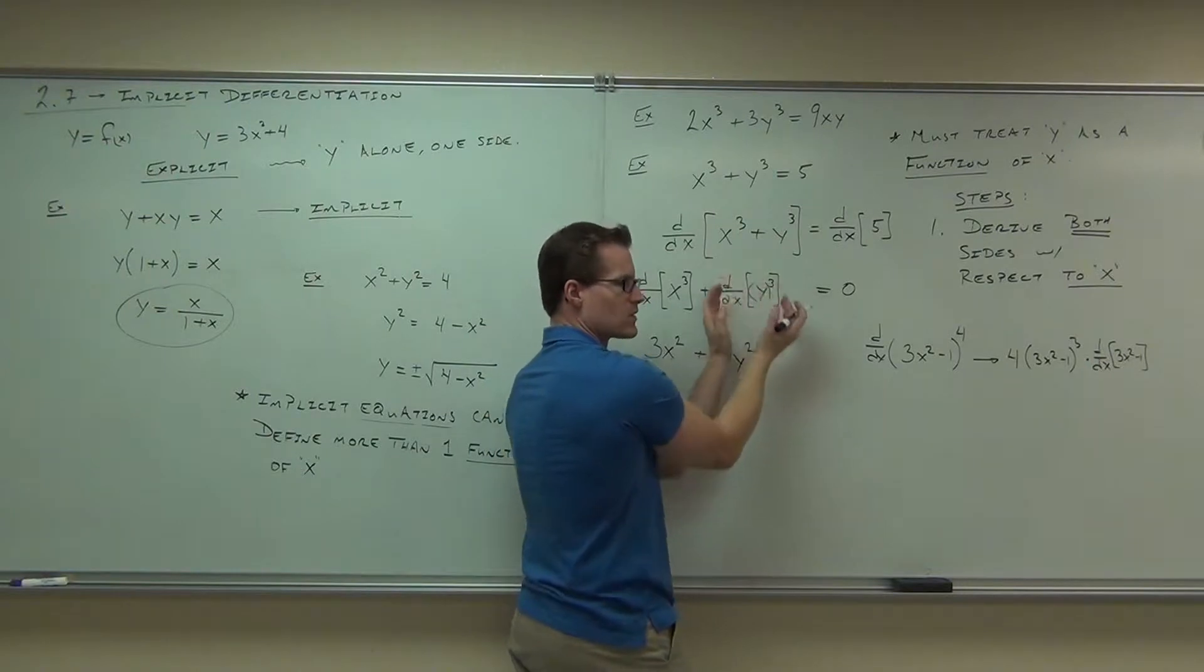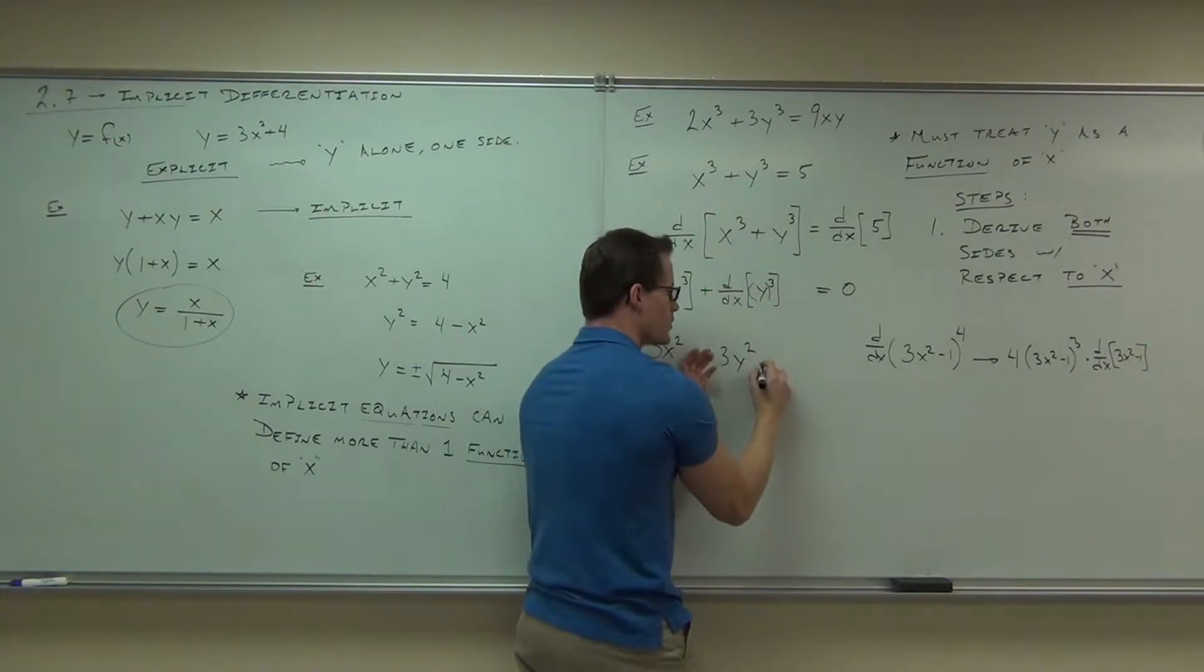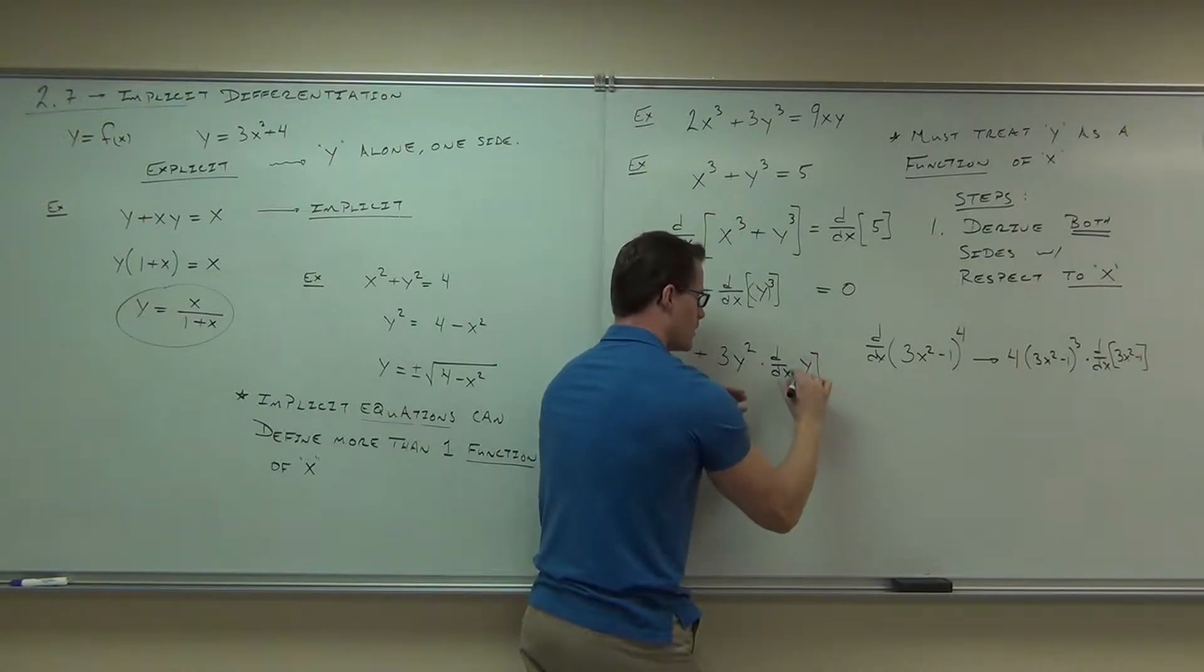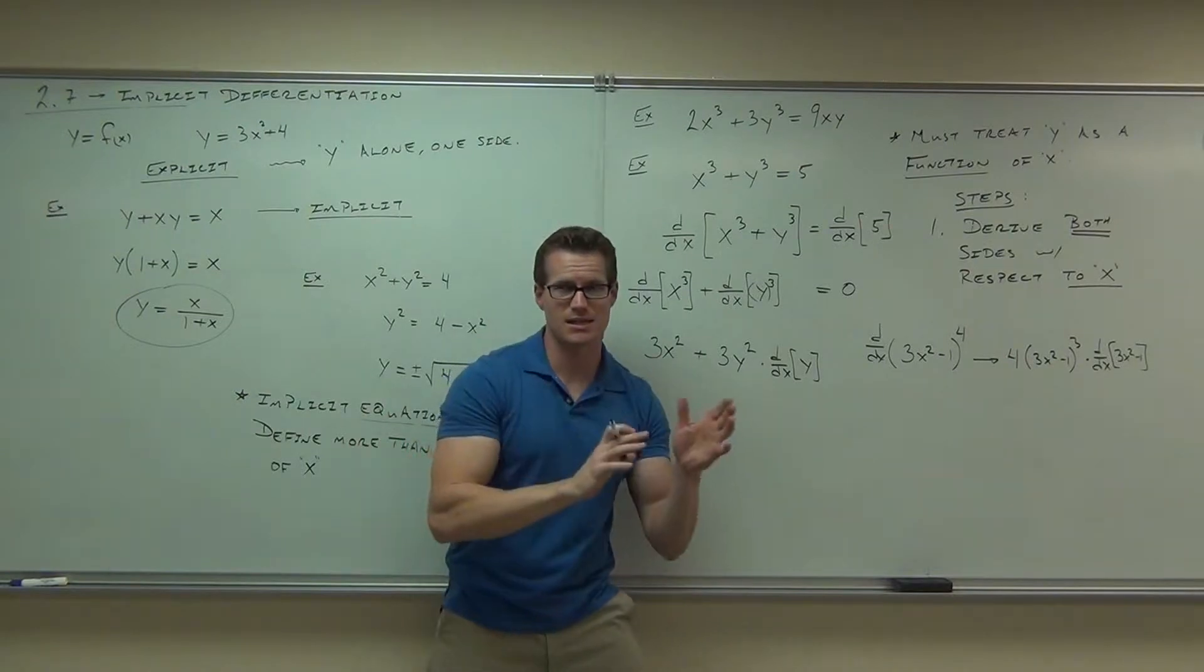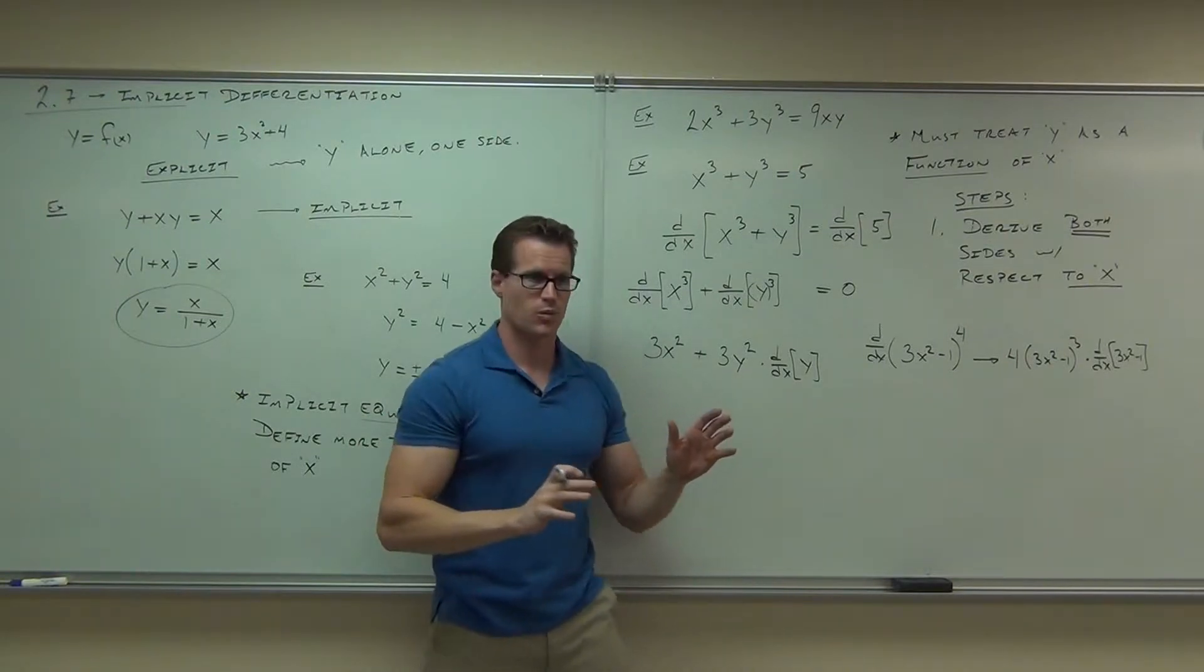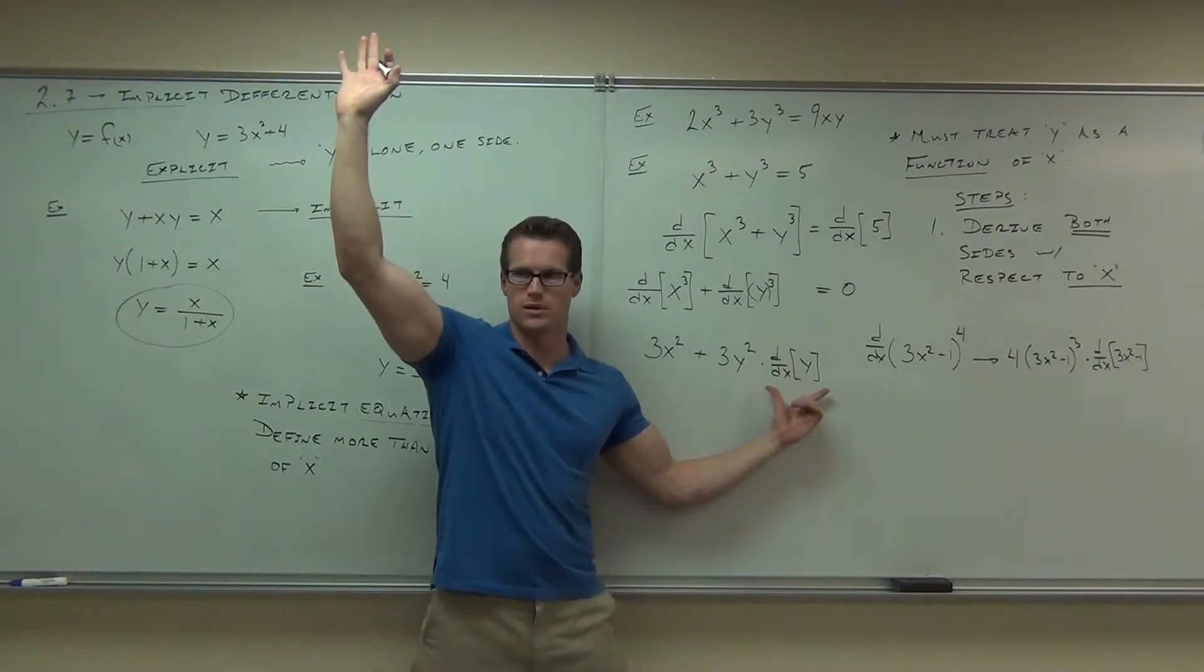What's the derivative of, what's the inside here? The y. So we multiply by d dx of y. Are you clear on that? Do you see the chain rule at work? Do you see that? You need to see this before you go any further. Raise your hand if you feel okay, I'm getting that part of it. See where that's coming from?